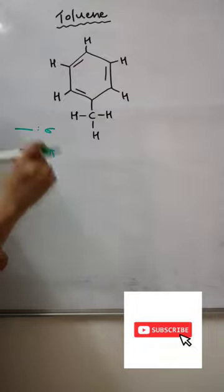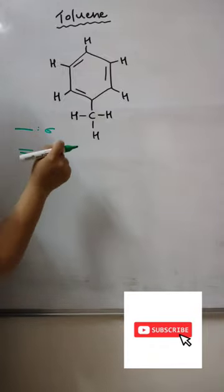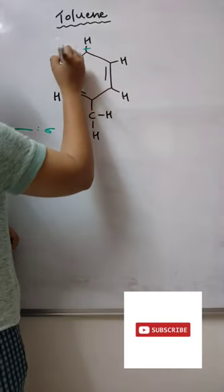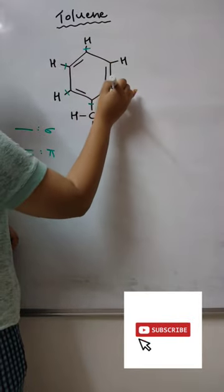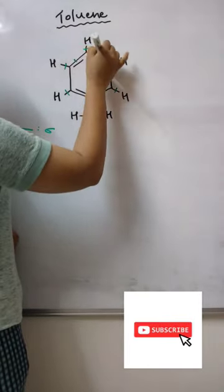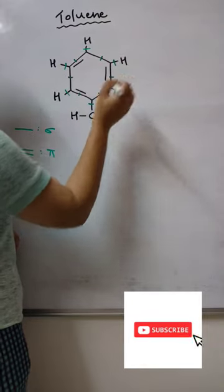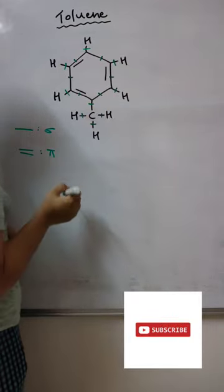So, let us count the total number of single bonds which are present in our structure. So, I have 1, 2, 3, 4, 5, 6, 7, 8, 9, 10, 11, 12, 13, 14, 15, right?